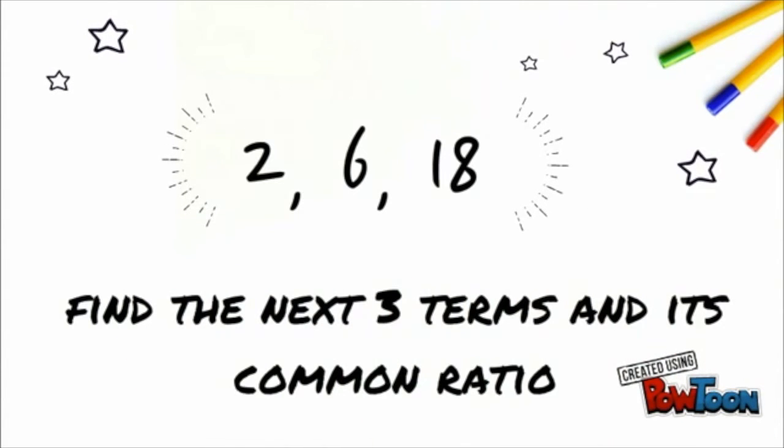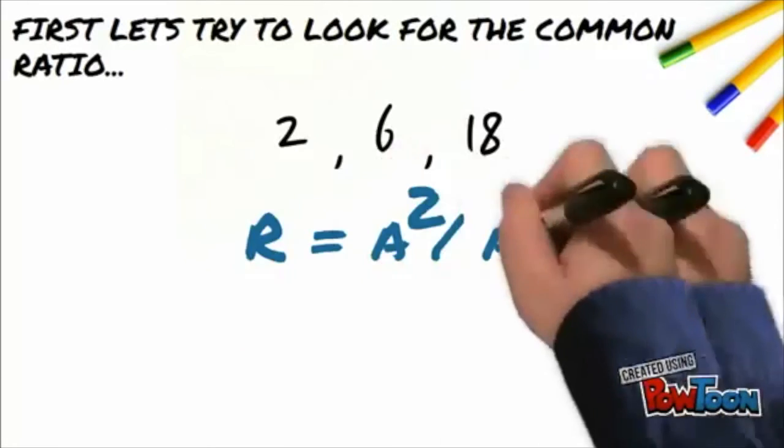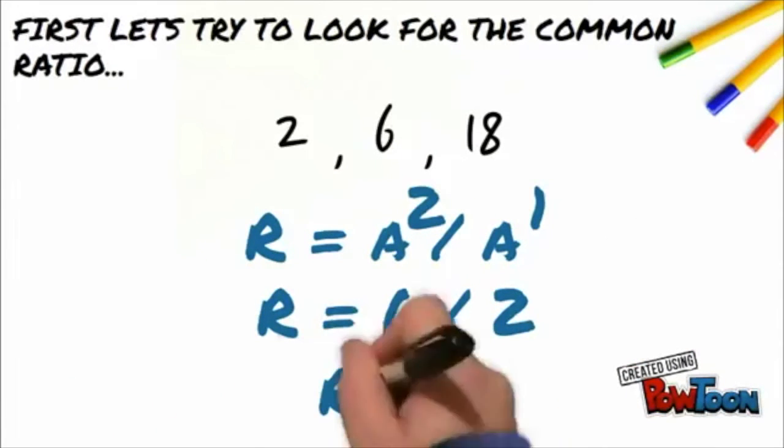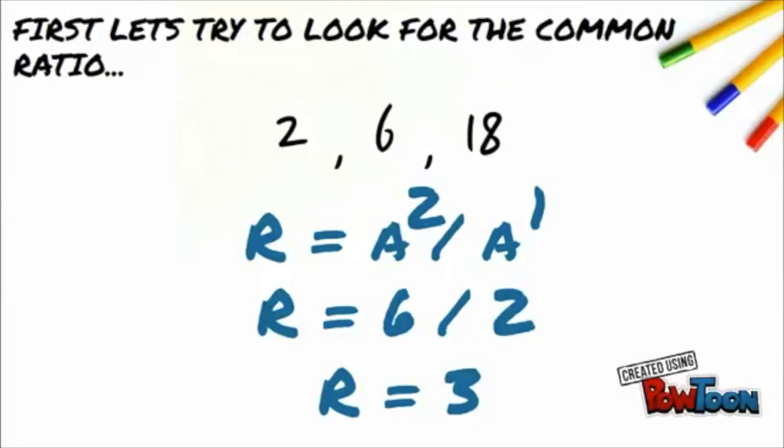For our second example, the given sequence is 2, 6, and 18. Find the next three terms and its common ratio. Just like what we did in the previous example, all we need to do is divide the second term by the first term to get the common ratio. The second term of the sequence is 6 and the first term is 2. So, 6 divided by 2 is positive 3 and that will be the common ratio.